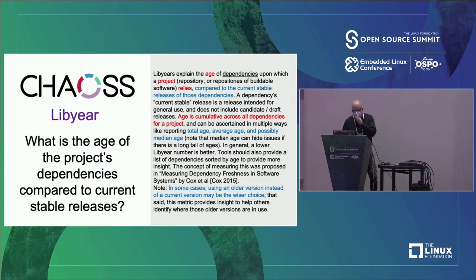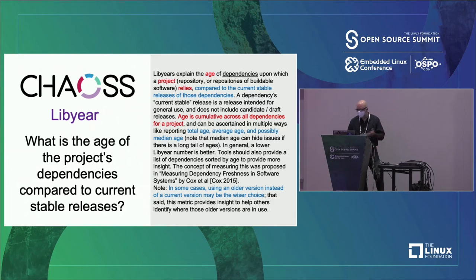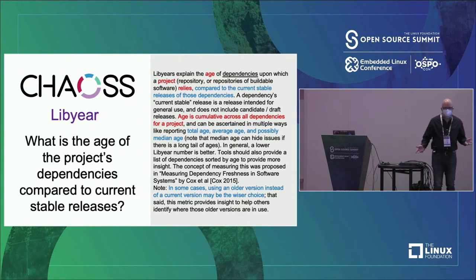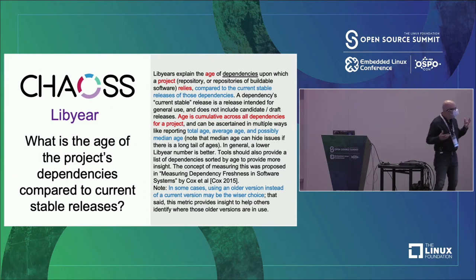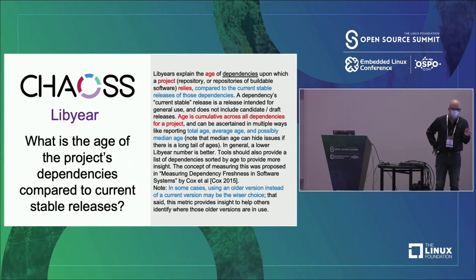The question is: what is the age of the project's dependencies compared to the current stable release? For the LibYear metric, how do you come up with a number? It's cumulative across all the dependencies, though there are other ways — you could apply a mean, average, or median. The math depends on how you want to evaluate it within your organizational context. LibYear gives a general idea, if you're looking at 11,000 projects in your OSPO, which ones have the oldest dependencies compared to the most current stable release.